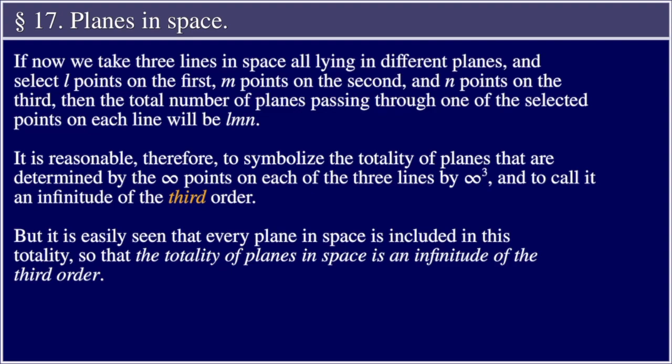Section 17. If now we take three lines in space, all lying in different planes, and select l points on the first, m points on the second, and n points on the third, then the total number of planes passing through one of the selected points on each line will be lmn. It is reasonable, therefore, to symbolize the totality of planes that are determined by the infinite points on each of these three lines by infinity cubed, and to call it an infinitude of the third order.